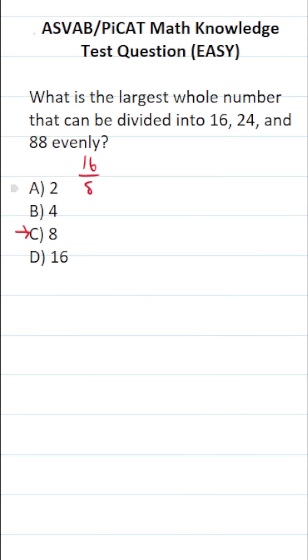What is 16 divided by 8? That goes into 16 two times evenly. What is 24 divided by 8? 24 divided by 8 is 3. And finally, what is 88 divided by 8? 88 divided by 8 is 11.